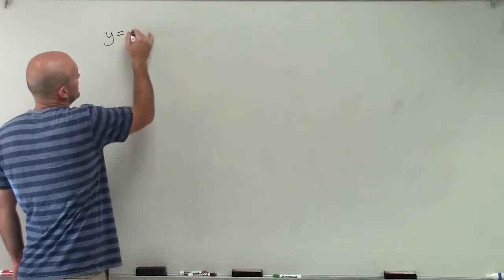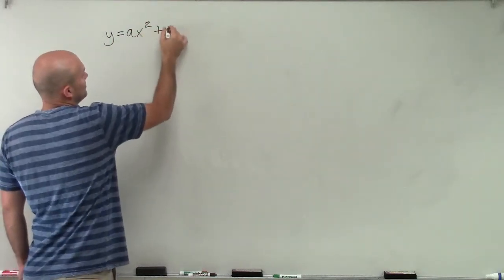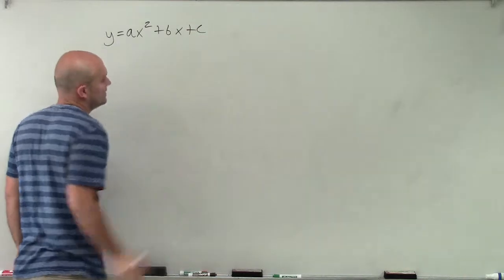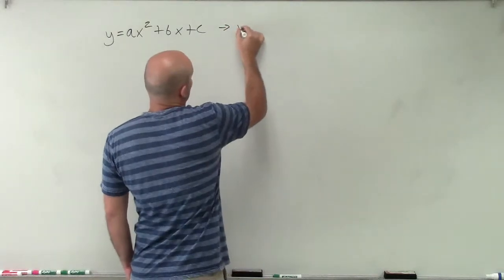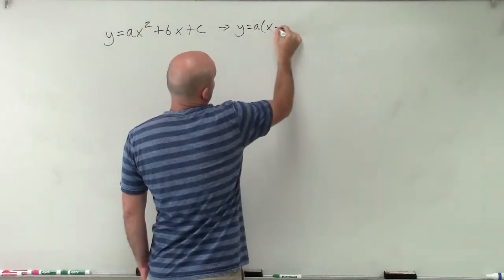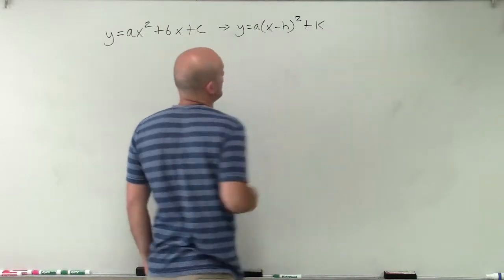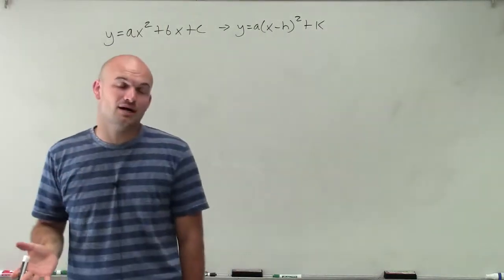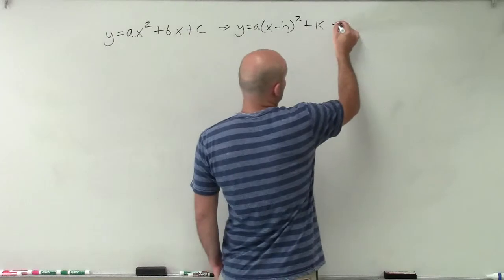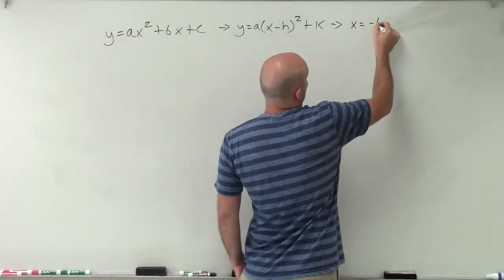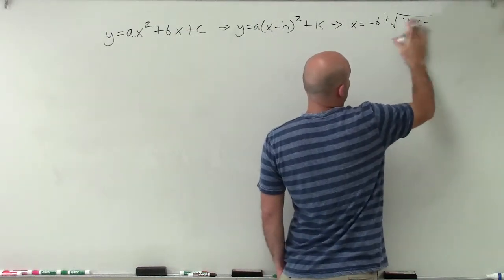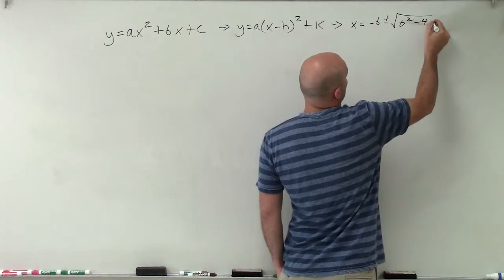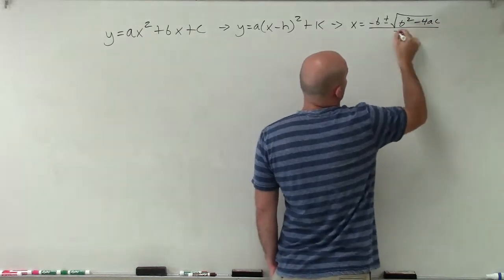Let's go back to what we've been doing. We've been talking about quadratic equations in the form y equals ax squared plus bx plus c. A couple of things we've done is rewrite them. When we completed the square, we wrote them into the form y equals a times x minus h squared plus k. When we started looking at the quadratic formula, we saw it was in the form x equals opposite of b plus or minus the square root of b squared minus 4ac all over 2a.